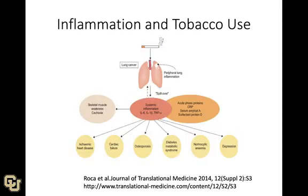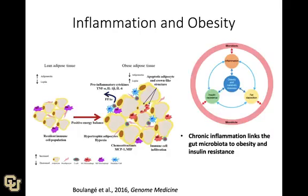Looking at inflammation and tobacco use, we know that tobacco use increases a number of inflammation signals throughout the body. Inflammation is also super important for obesity, as is the microbiome. Chronic inflammation has been linked to gut microbiota, obesity, and insulin resistance — these things go together. The gut microbiome and inflammation are interconnected across these different disease states, and there are papers available if you're interested in exploring the details.